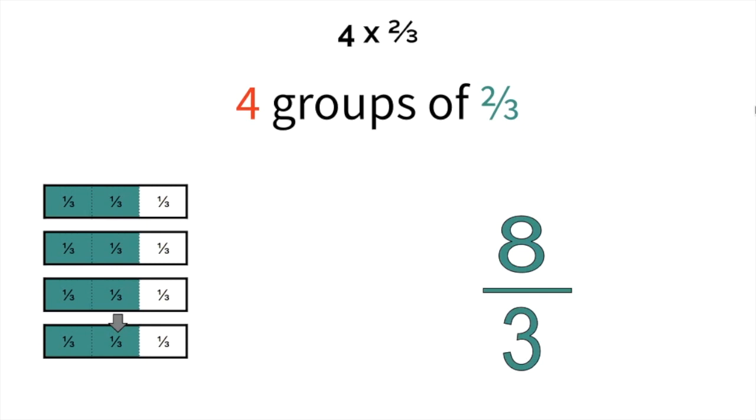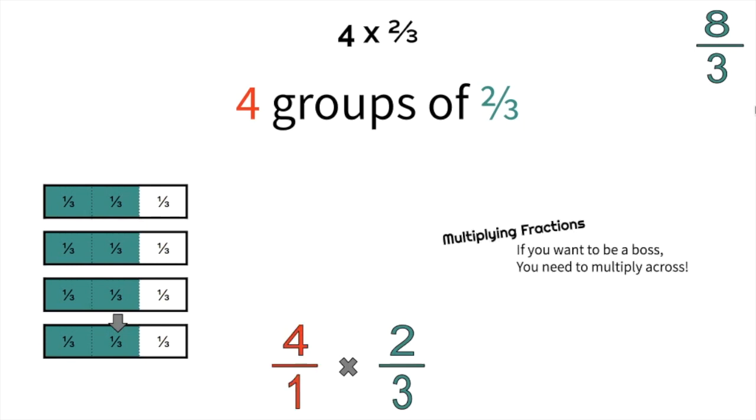But what if we want to multiply? Don't forget, we need to change 4 into a fraction. 4 as a fraction is 4 over 1. If you want to be a boss, you got to multiply across. 4 times 2 is 8, and 1 times 3 is 3. So again, you'll see our answer is 8 thirds.